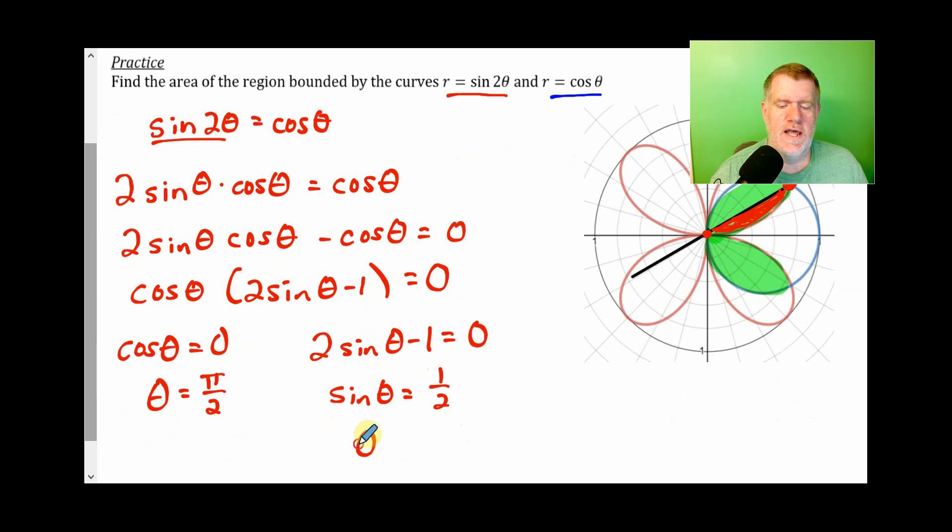If I solve this, I get sine of theta equals one half. Where is the sine equal to one half? Well, the sine is equal to one half at pi over six. So this is pi over six. And the pi over two comes from here. If you notice, this green part of the graph is bounded between pi over six and pi over two. This pi over two is tangent here as you get closer to the point zero.